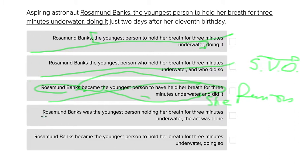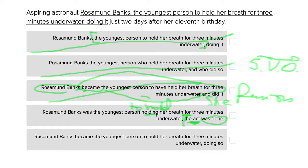The fourth option: 'Rosamund Banks was the youngest person holding her breath for three minutes underwater. The act was done just two days after her 11th birthday.' This doesn't make sense because 'holding' implies the action is still happening right now, whereas 'to hold' is an infinitive referring to the act in the abstract. Also, 'the act was done' introduces a completely new subject, making the second part its own separate sentence. So this is not only a run-on but 'holding' is the wrong verb form.